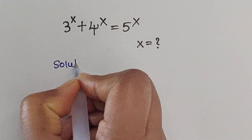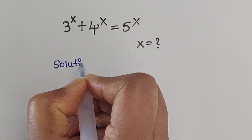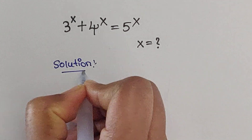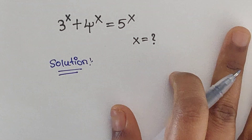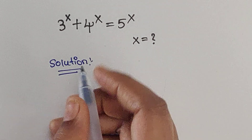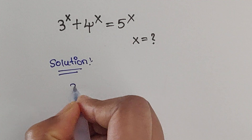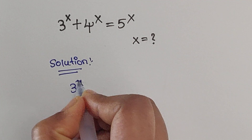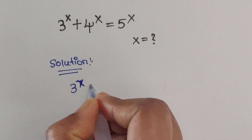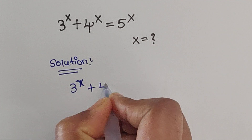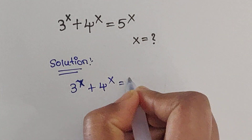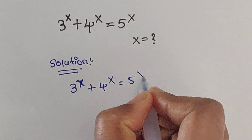Solution. 3 to the power of x plus 4 to the power of x equal 5 to the power of x.